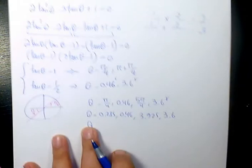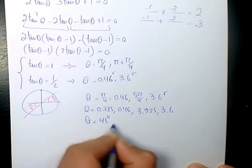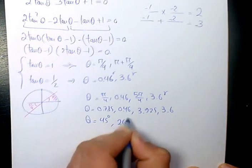If you want to change it in terms of degrees, you can multiply by 180 and divide by 3.14. It's going to be 45 degrees. The second one is going to be 26 degrees.